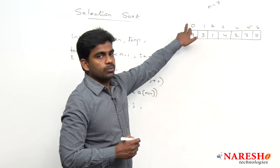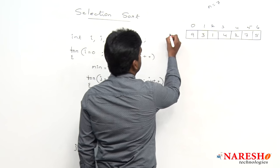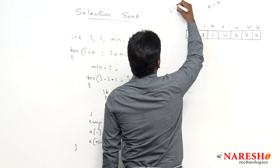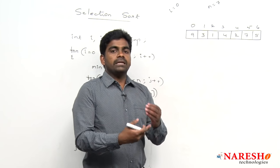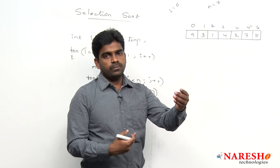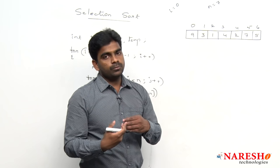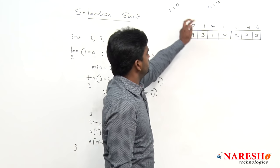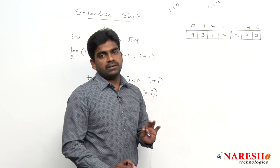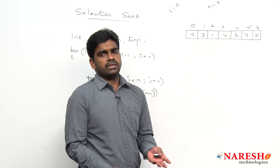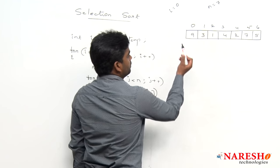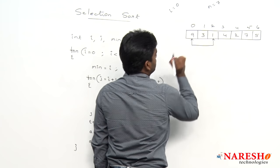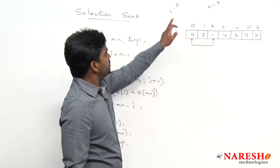When i value is 0, we take that index and store it into min. With the help of the inner loop, we find the minimum element in the list comparing from that index onward. We consider the first index element as the minimum element. Whenever we find a smaller element, that index element and min element get swapped when i value is 0.